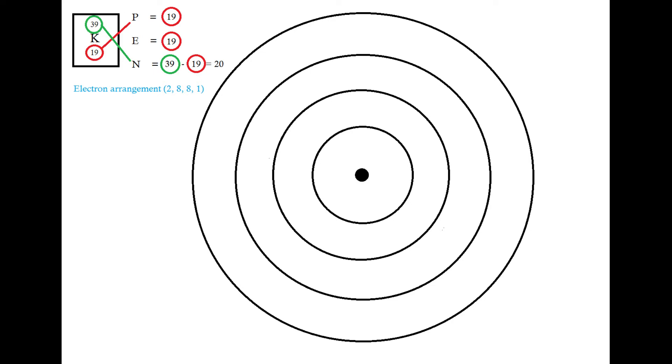And because I know that I fill from the inside out, going 2, 8, 8, we can say that potassium has got two electrons in the first shell, eight electrons in the second shell, and eight in the third shell, which leaves us with one for the fourth shell. So we have an arrangement of 2, 8, 8, 1.